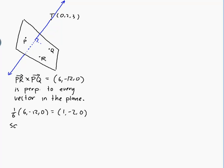So, the line is given by T, which is (0,2,3), plus multiples of this. So, (0,2,3) + t(1, -2, 0) for t a real number. And that line will be normal to my plane.